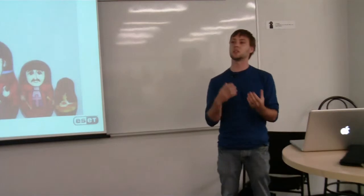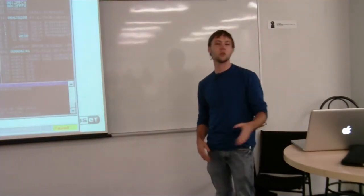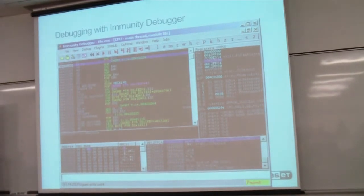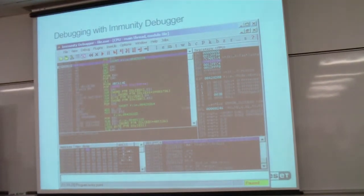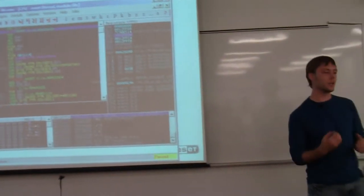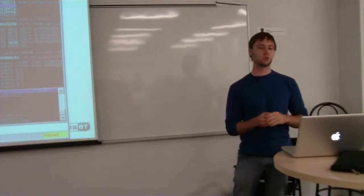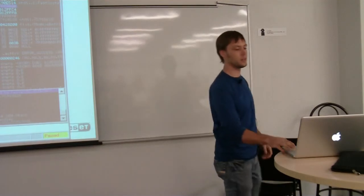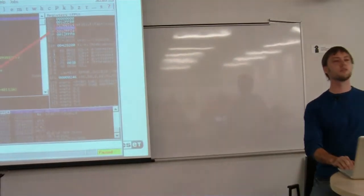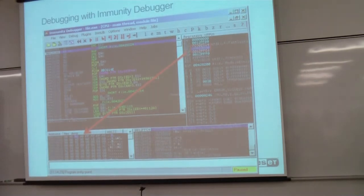One trick packers use is to detect if the file is running inside a debugger. The debugger I often use is called Immunity Debugger, released by Immunity Security. It's an enhanced Windows-only debugger with a Python interpreter built in, so you can use Python to automate lots of tasks. Many malware samples will check if they are being run under a debugger by checking the Process Environment Block, which is a memory structure in Windows. The first field in the PEB is a flag — if it's 1, a debugger is present; if it's 0, no debugger is present.